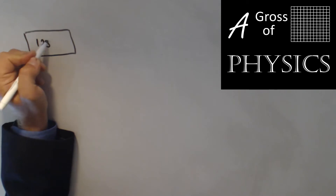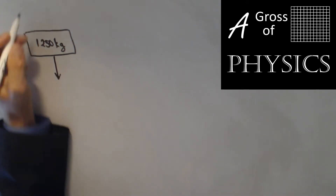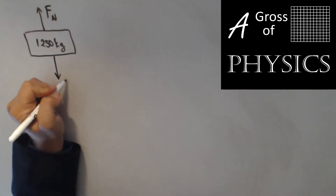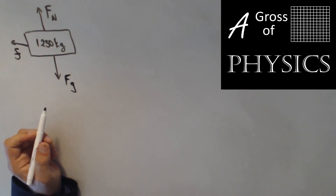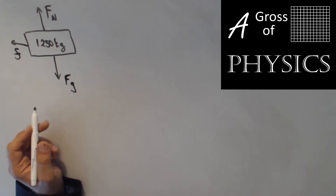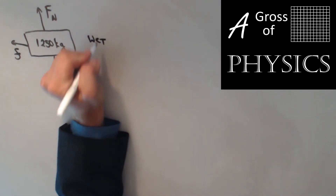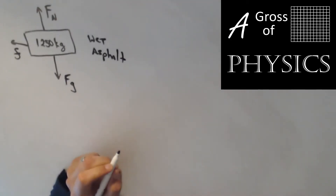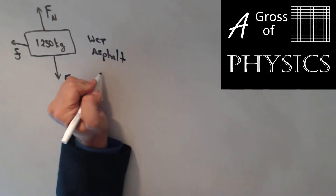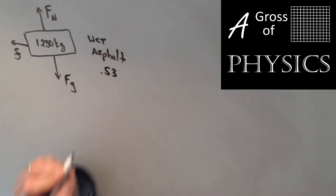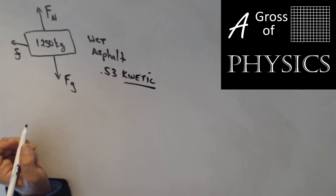The free body diagram is going to involve the mass of the car inside the box and the forces acting on it. All we are concerned with is the amount of friction, so the forces we will deal with are gravity and the normal force. It doesn't state which type of friction we have, but we know we are moving along wet asphalt. Looking at our chart, rubber on asphalt — wet — gives us a kinetic coefficient of 0.53. Since only kinetic is listed, we can only find the kinetic friction.